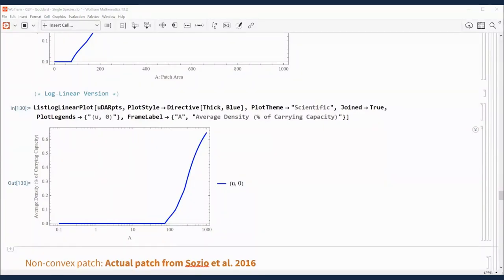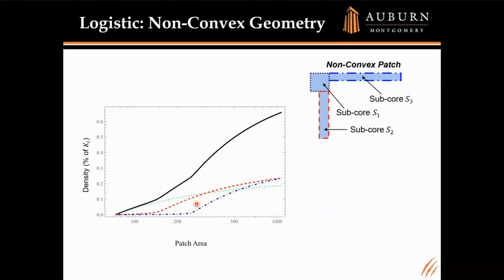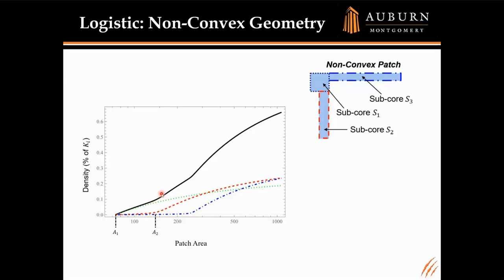In the PowerPoint, the detail shows density in each sub-core: green for sub-core one, red for sub-core two, blue for sub-core three. Once we passed the first critical area threshold A1, the center core activated but others had virtually no density. Past the second threshold, sub-core 2 (red) activated, causing a sharp increase in the overall DAR curve. Finally, crossing the last threshold, the blue sub-core activated, giving another sharp increase, leading to DAR slope discontinuity.